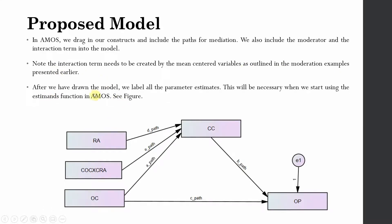After we have drawn the model, we label all the parameters. This will be necessary when we start using the estimates function in AMOS. We have to label these parameters, and this has been discussed in detail in our mediation example earlier.